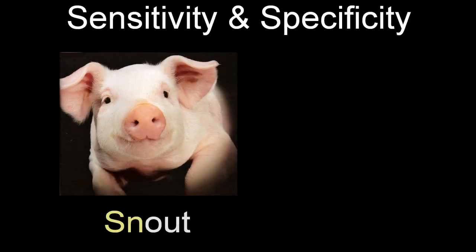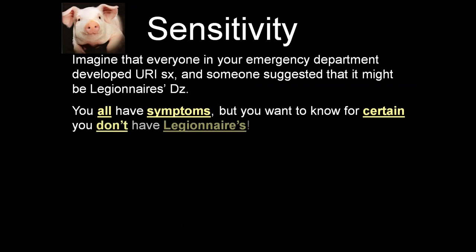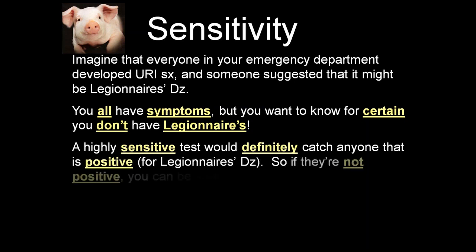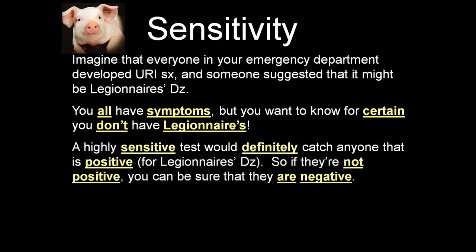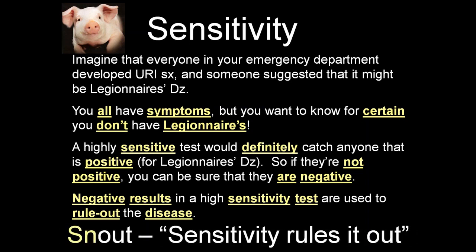Two more thoughts about sensitivity and specificity. The mnemonic I like is SnNout and SpPin. Imagine everyone in your department developed upper respiratory symptoms and someone suggested it might be Legionnaires'. A highly sensitive test would definitely catch anyone positive for Legionnaires' disease, so if they're not positive, you can be sure they are negative. Negative results in a high-sensitivity test are used to rule out the disease. SnNout — sensitivity rules it out.